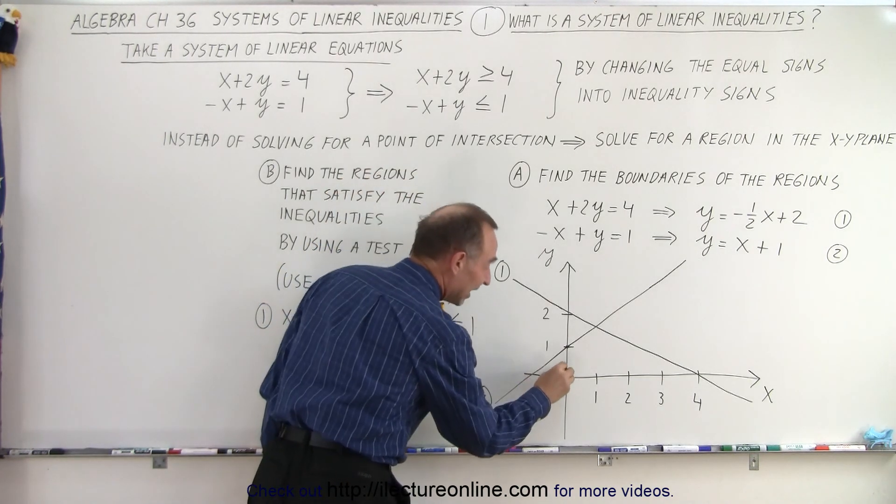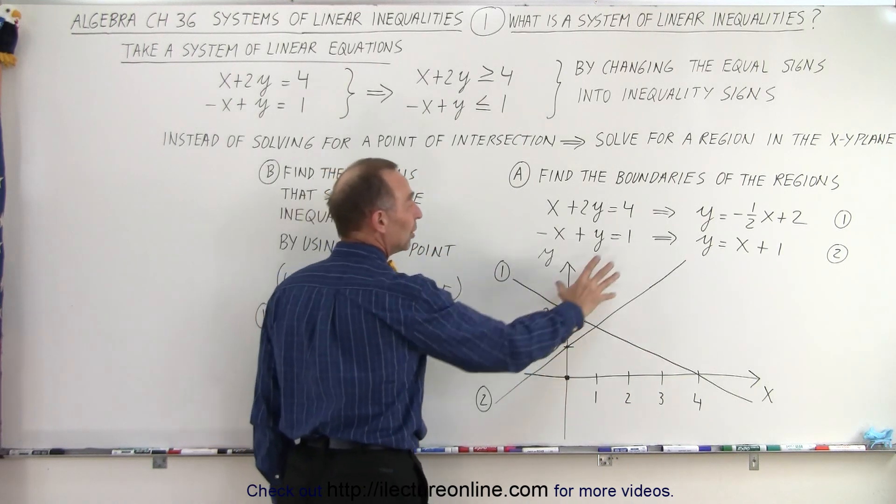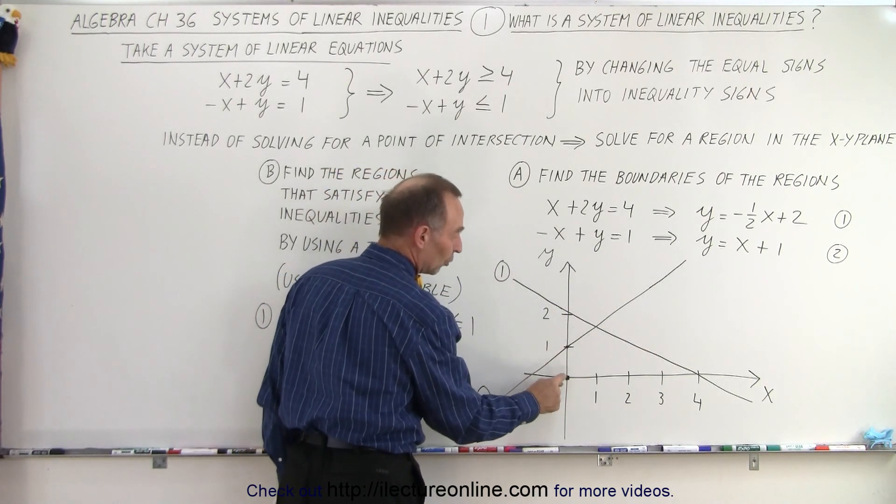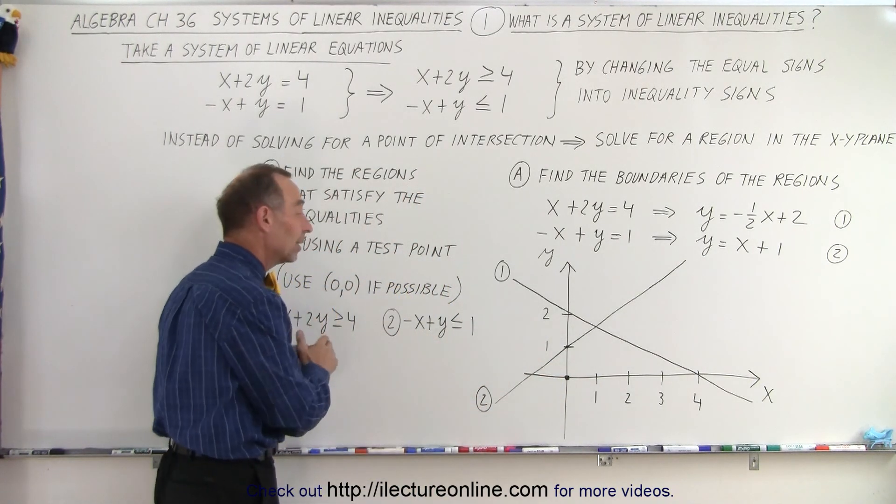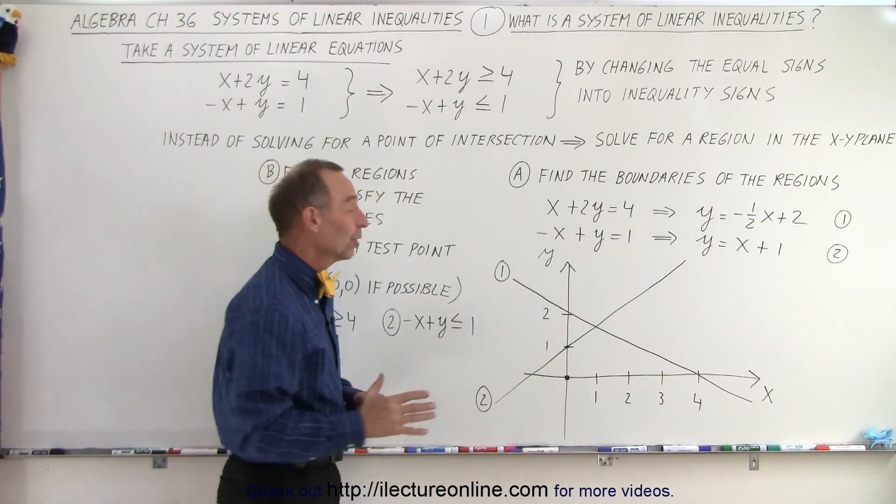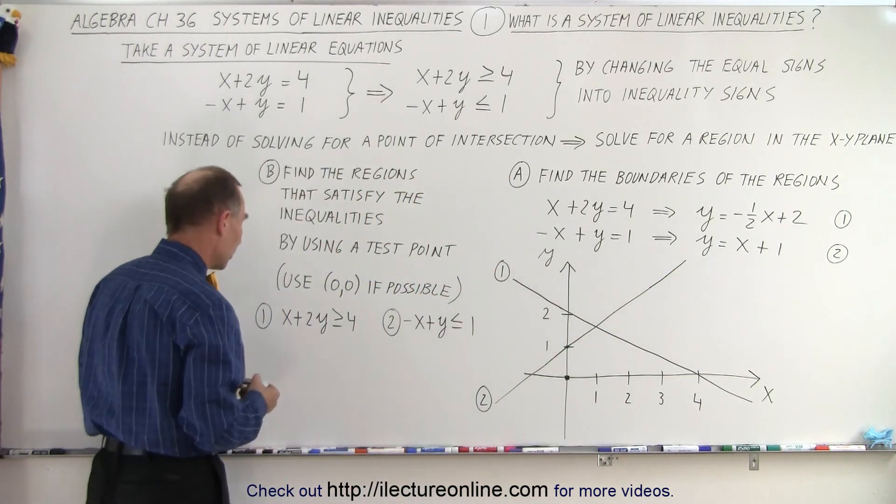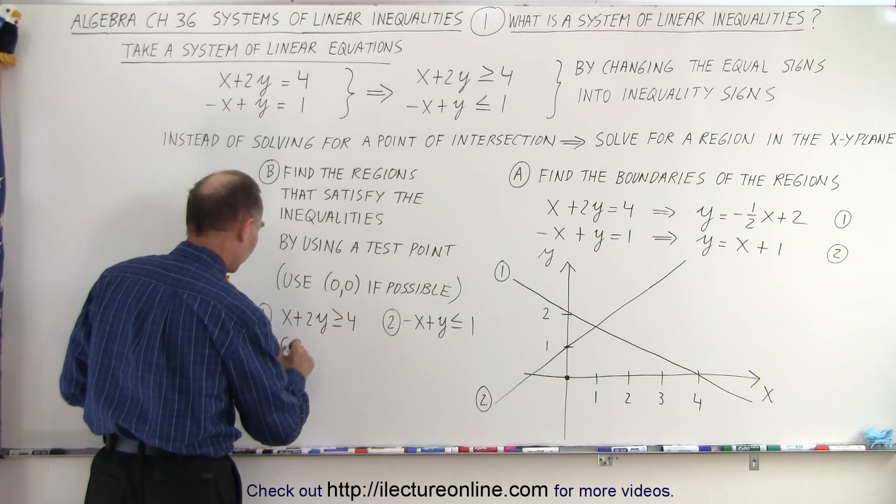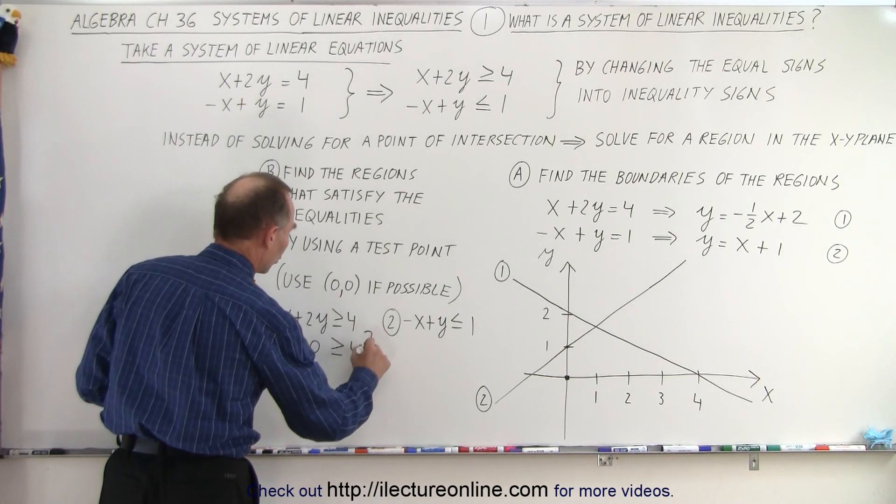So what I want to do is I want to take this point and notice this line divides the whole plane into two regions, this region and this region. So the 0,0 point either lies in the region that satisfies the inequality or doesn't lie in the region. In other words, the other side satisfies the inequality. So let's try it. We're going to plug in 0,0. So 0 plus 0, is that greater than or equal to 4? Question mark.